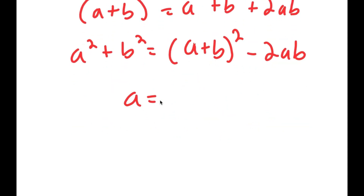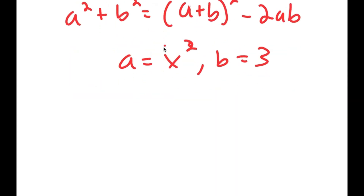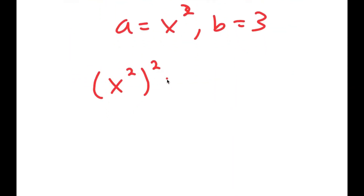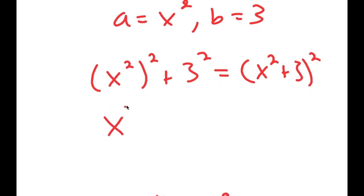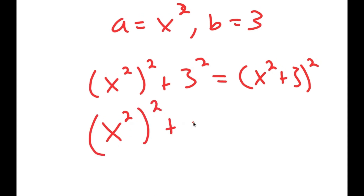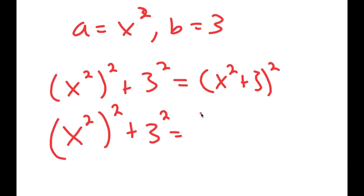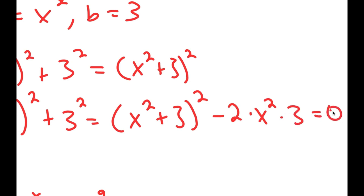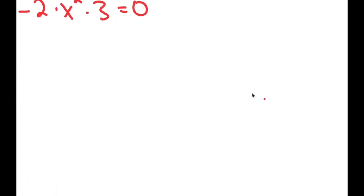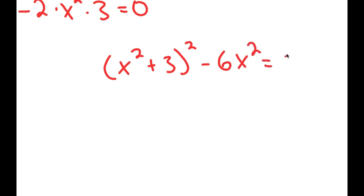This means that a is equal to x squared and b is 3. Going back, I get x squared to the power of 2 plus 3 squared, which equals x squared plus 3 squared minus 2 times x squared times 3, which is equal to 0.